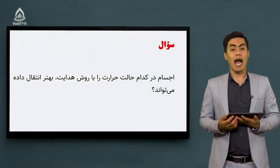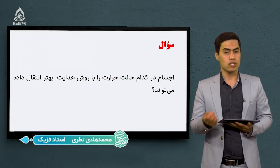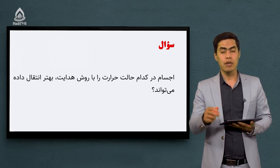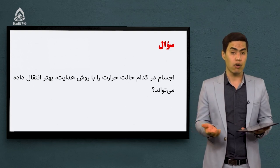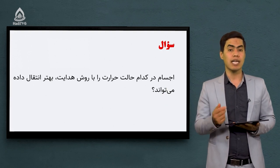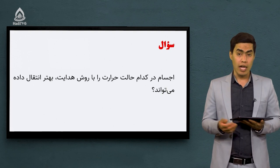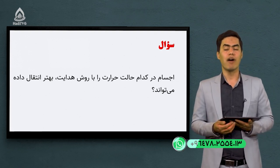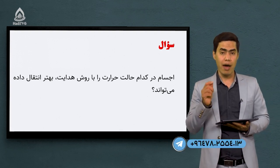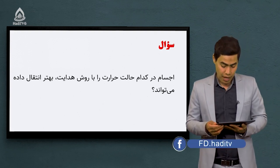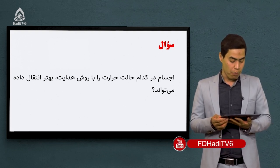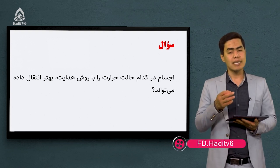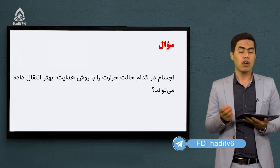در جلسه قبل ما در رابطه با انتقال حرارت صحبت کردیم. گفتیم که حرارت زمانی انتقال پیدا می‌کنه که بین دو جسم یا بین جسم و محیط اختلاف درجه حرارت وجود داشته باشد. حرارت از جسم گرم به جسم سرد منتقل می‌شه. روش‌های انتقال حرارت: هدایت، جریان و تشعشو. سوال اول: اجسام در کدام حالت حرارت را با روش هدایت بهتر انتقال می‌دهند؟ در روش هدایت هر سه حالت ماده یعنی جامد، مایع و گاز می‌توانند حرارت انتقال پیدا کنند.